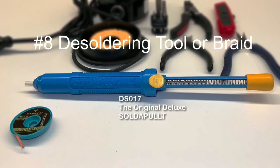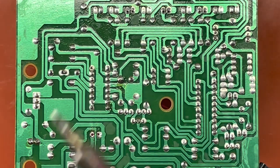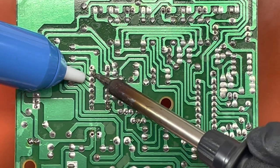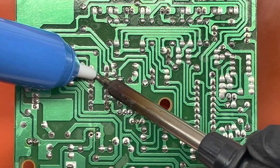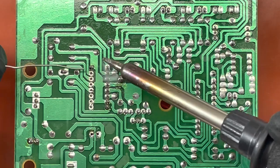Number eight, desoldering tool or braid. As you're practicing, you may want to remove excessive solder. Also, if you have a scrap circuit board assembly, you can desolder the components without removing them to save time when practicing.